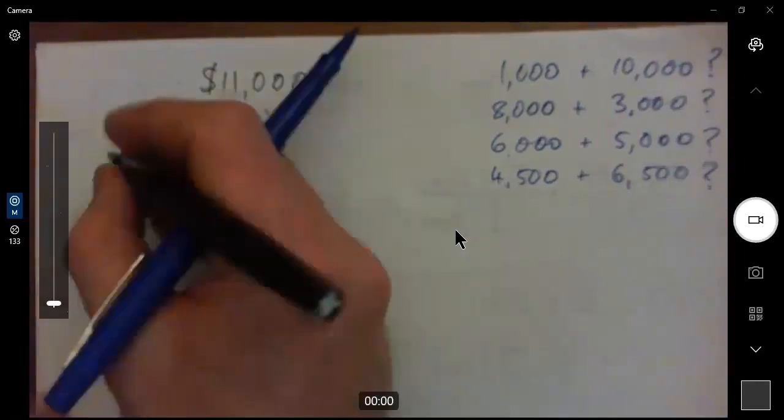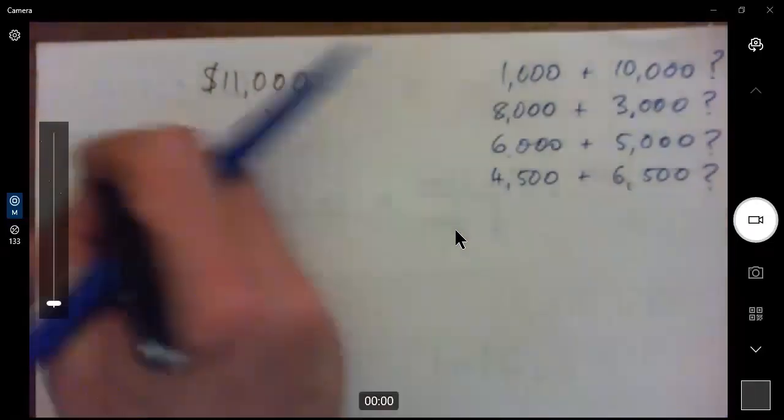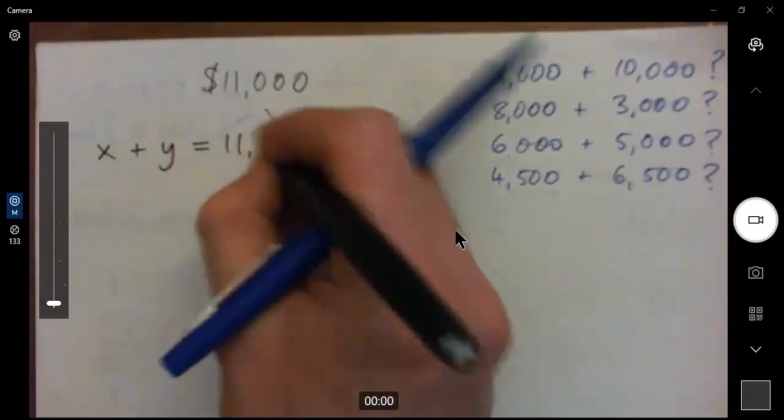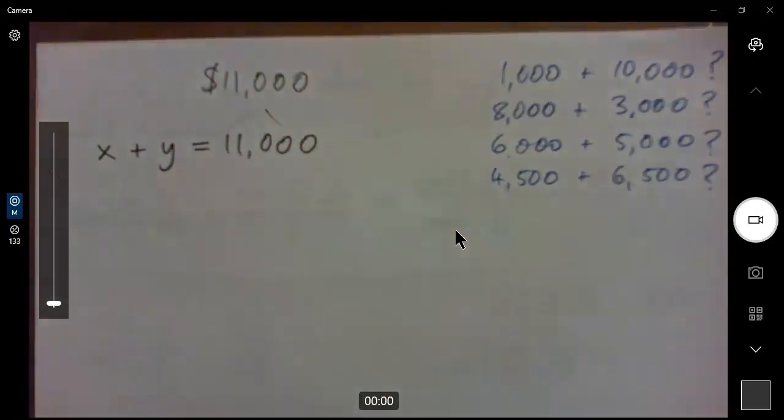Yeah. Because I hope we can all understand the first equation, which is X plus Y, the two unknown numbers, equal $11,000. Now, are we all okay with that part, at least? Yeah.